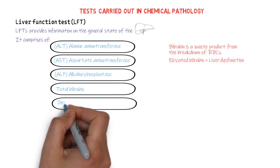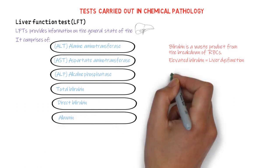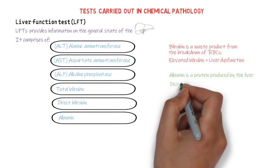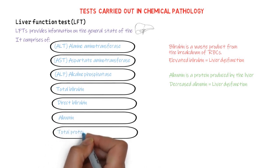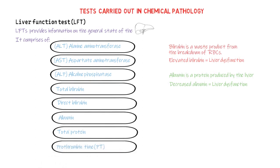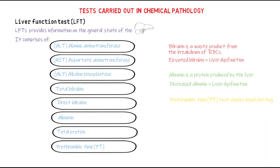Also, we have direct bilirubin and albumin. Albumin is a protein produced by the liver, and a low level of albumin suggests liver dysfunction. Under the liver function test, we also have total protein, which measures the amount of blood protein. Another liver function test is the prothrombin time (PT), a test that checks the blood's ability to clot. The liver produces clotting factors, so an abnormal result may indicate liver dysfunction.